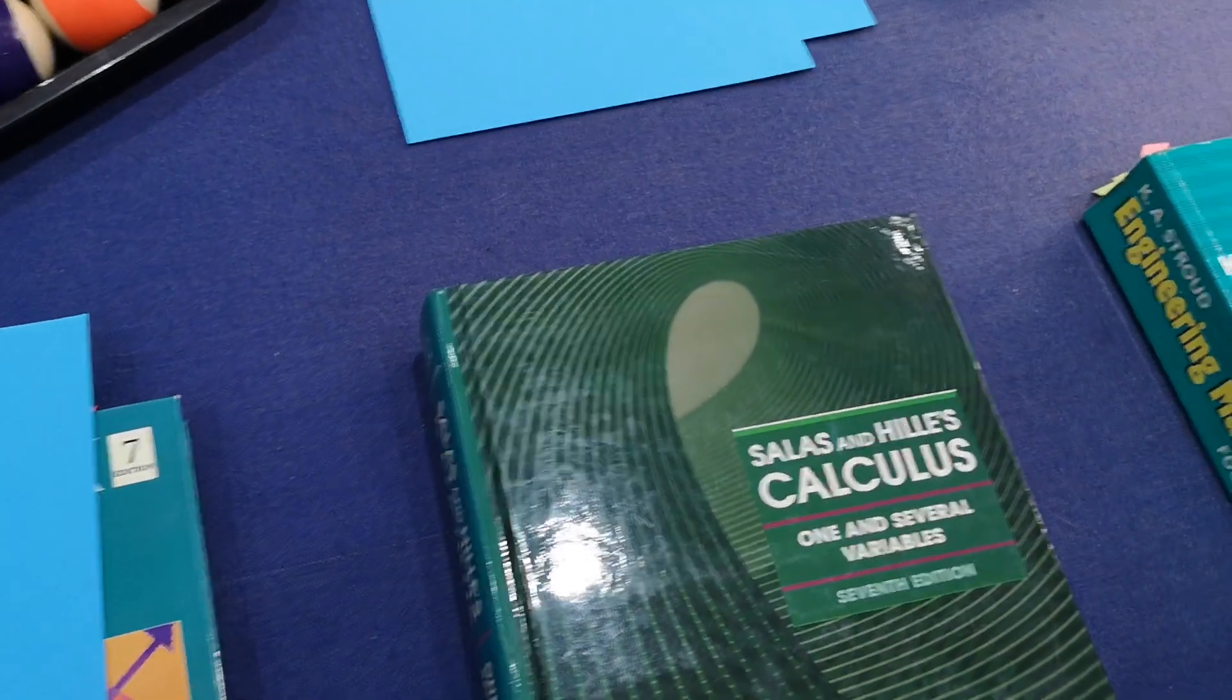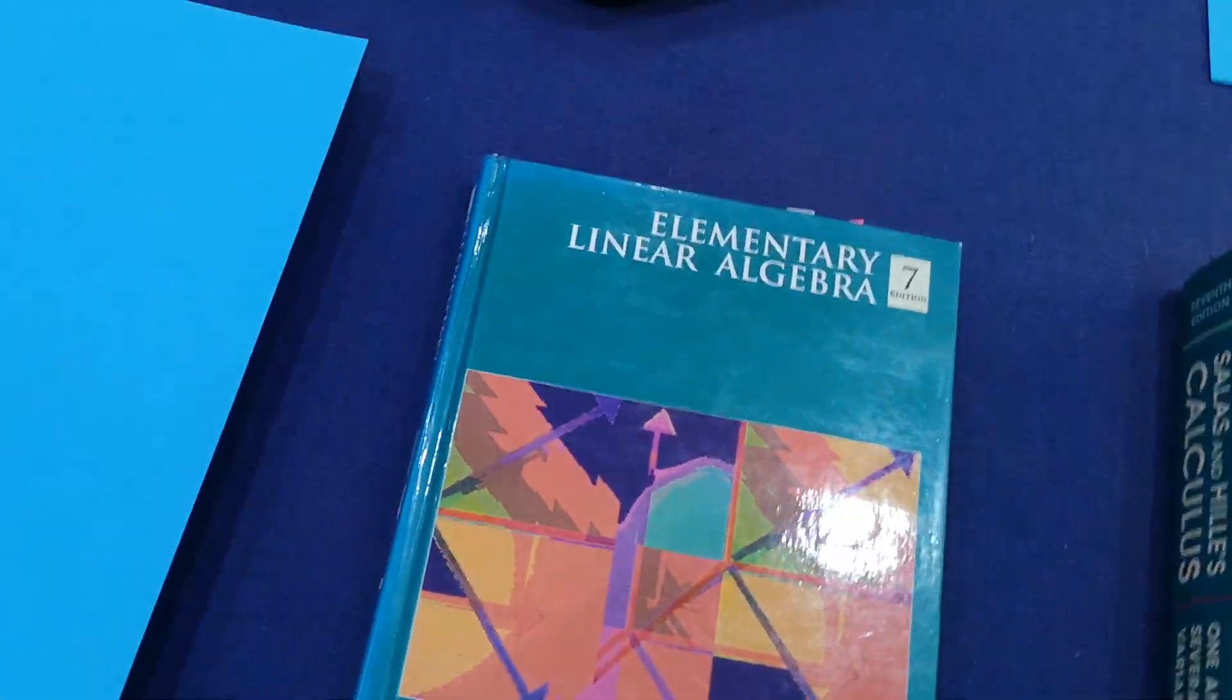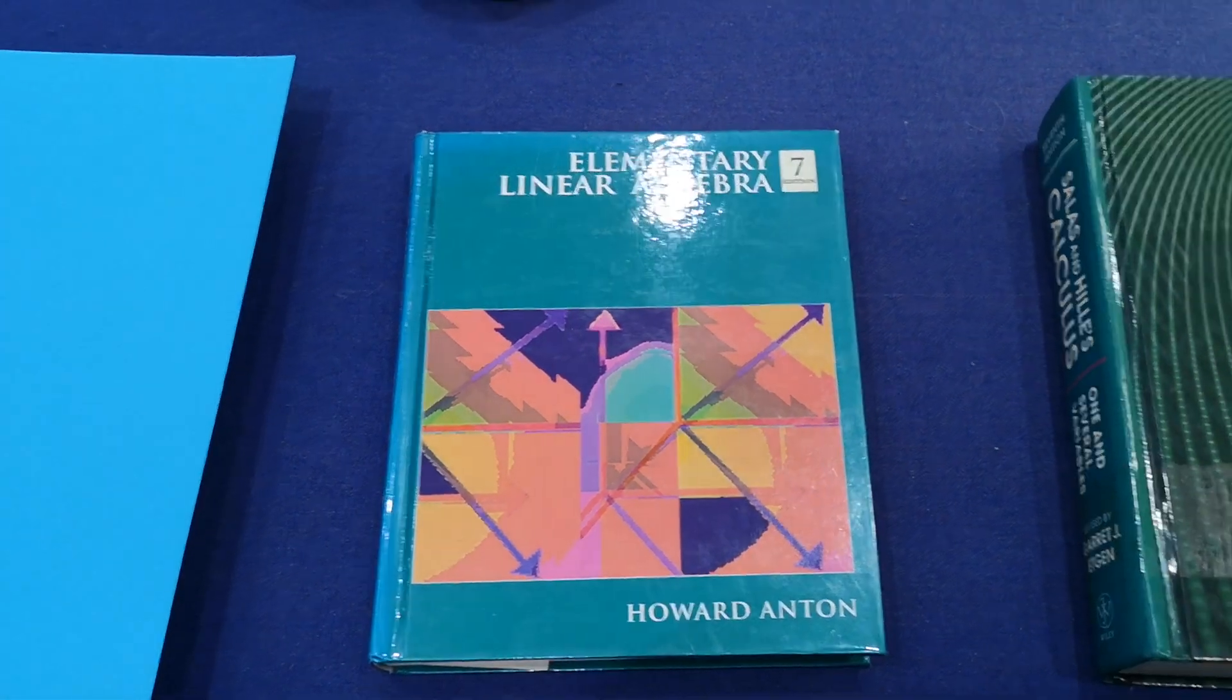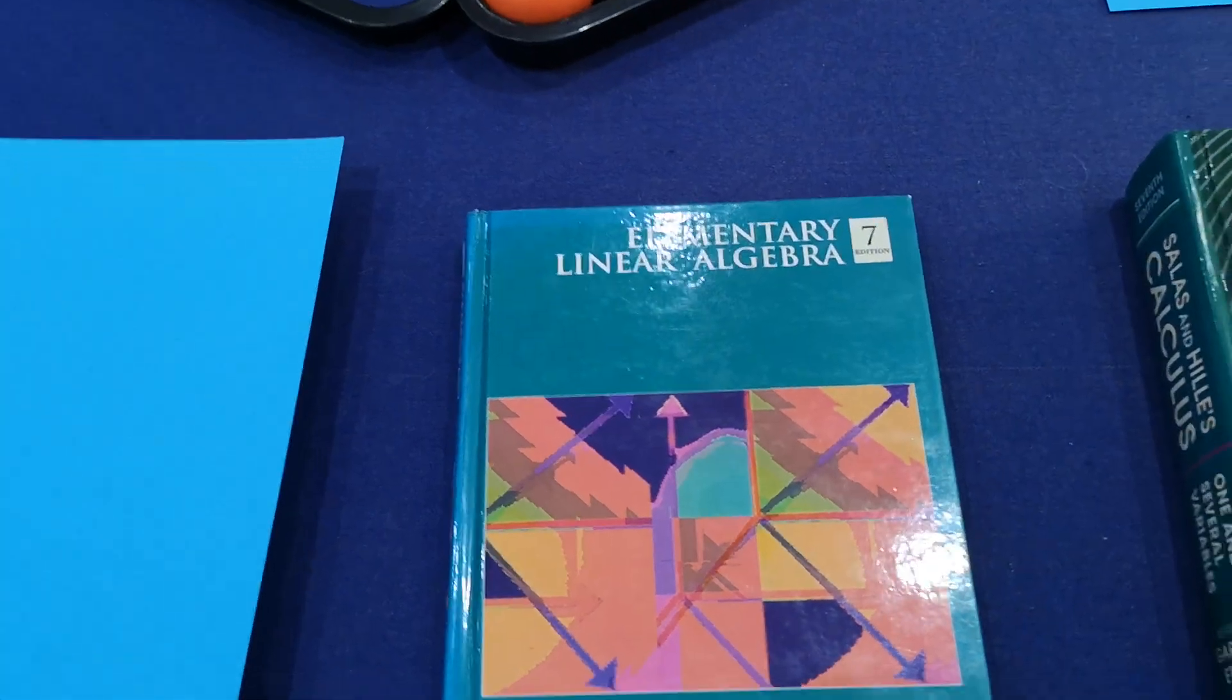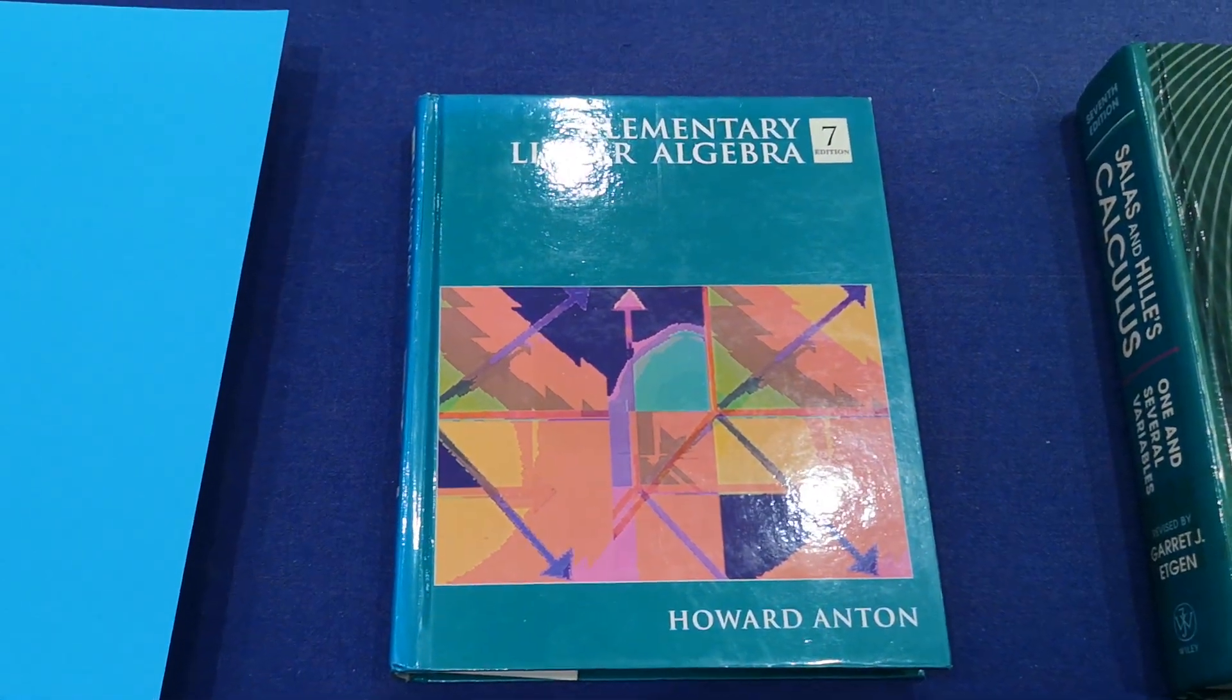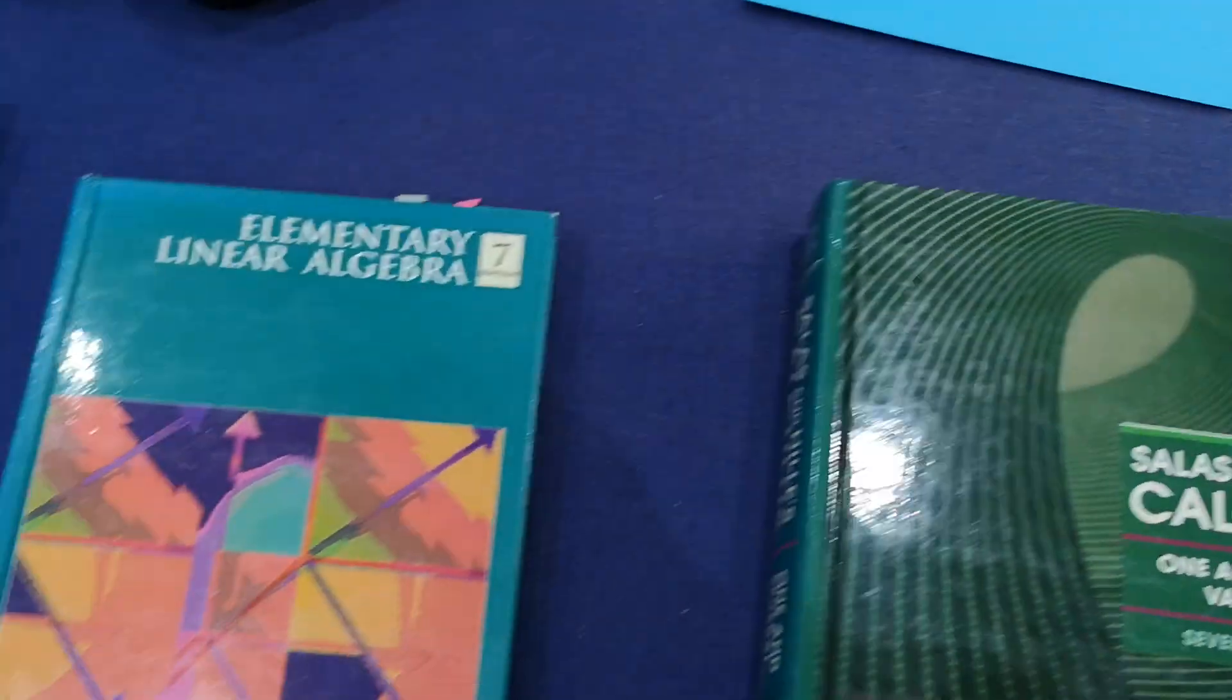And the third textbook, seventh edition. This is the Howard Anton Elementary Linear Algebra. I use this textbook to self-teach myself a lot of the linear algebra, diagonalization and things like that. Even before I went to university, it's a good textbook. It has a lot of questions and some sensible explanations.